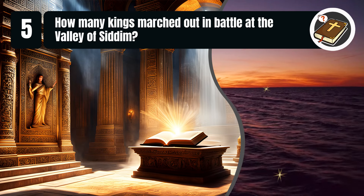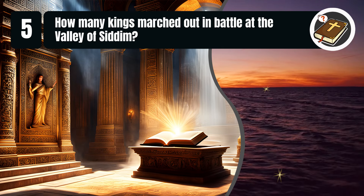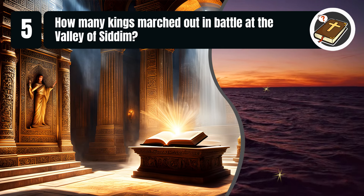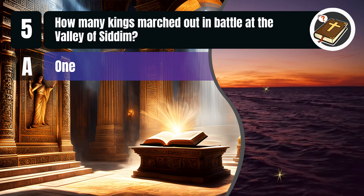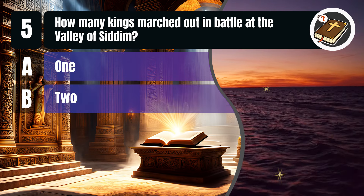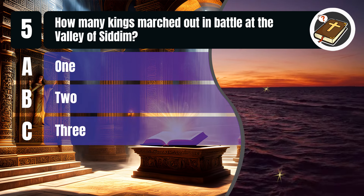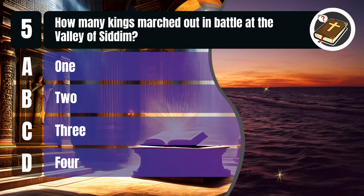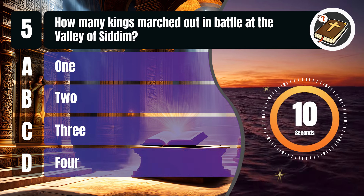Question 5. How many kings marched out in battle at the Valley of Sedim? A. 1. B. 2. C. 3. D. 4. You get 10 seconds.